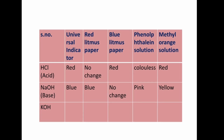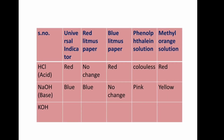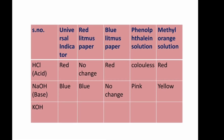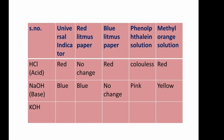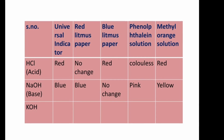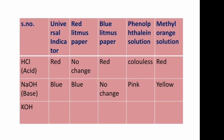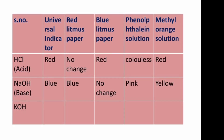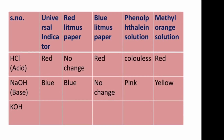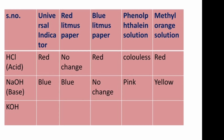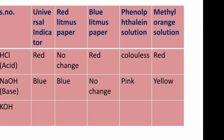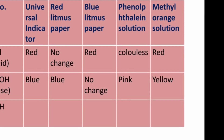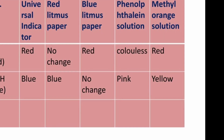In acidic medium — for example HCl — the color of universal indicator is red, red litmus shows no change, blue litmus turns red, and phenolphthalein and methyl orange give their respective acid colors. For NaOH, which is a basic medium, the indicator colors are the respective base colors.